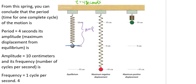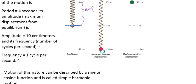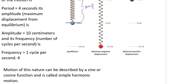And with the ideal conditions of perfect elasticity and no friction or air resistance, the ball would continue to move up and down in a uniform and regular manner. Motion of this nature can be described by a sine or a cosine function, and it's called simple harmonic motion.